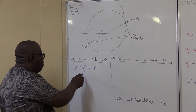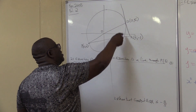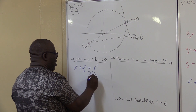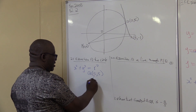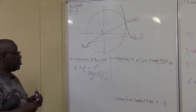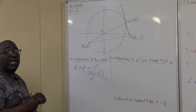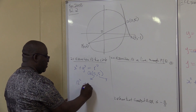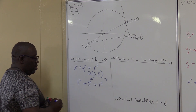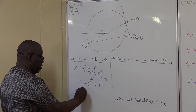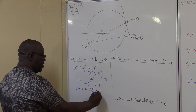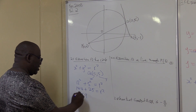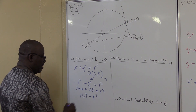Watch here. Is there a point that we know on this circle? Yes, there is point Q. We know point Q: x = 12 and y = 5. We are looking for r squared, so just take these x and y values and substitute them into the original equation. So it's 12² + 5² = r², which is 144 + 25 = r squared.